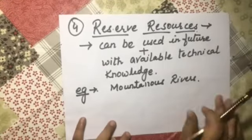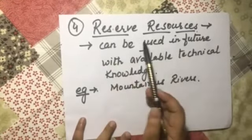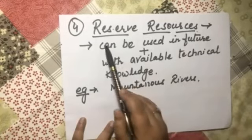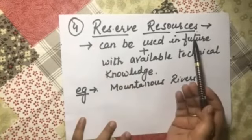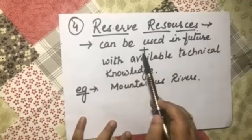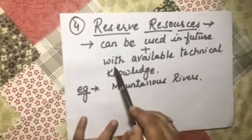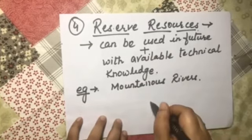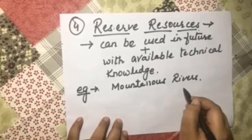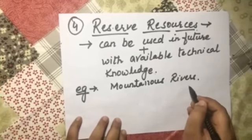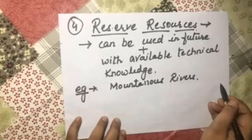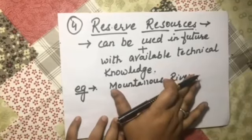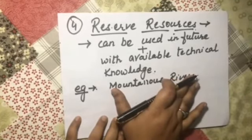The fourth type is reserve resources. As the word suggests, they are reserved for the future. Reserve resources can be used in the future with available technical knowledge. For example, Indian mountainous rivers are kept for future use — when we need them, we can use them. So mountainous rivers in India are known as reserve resources.